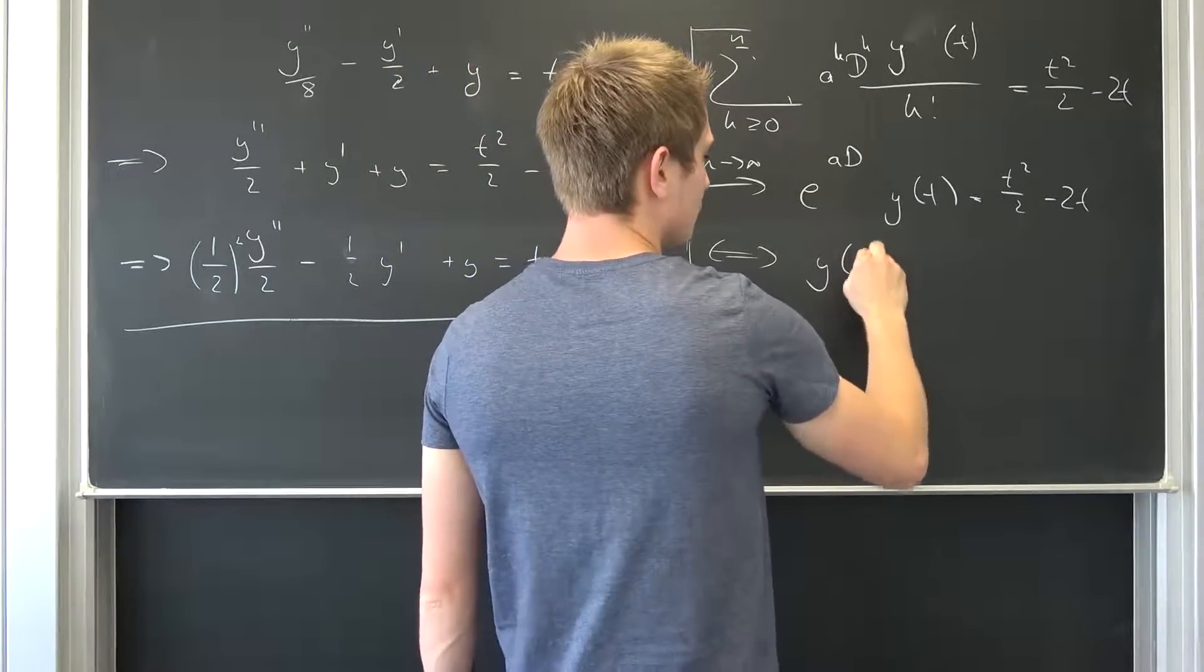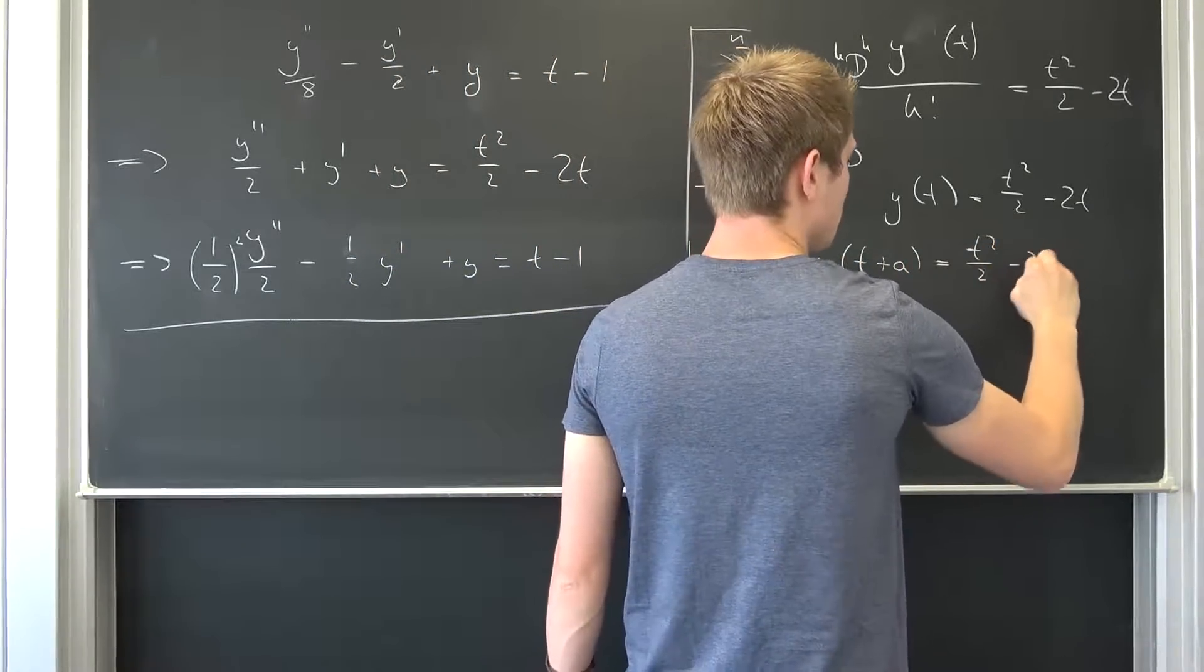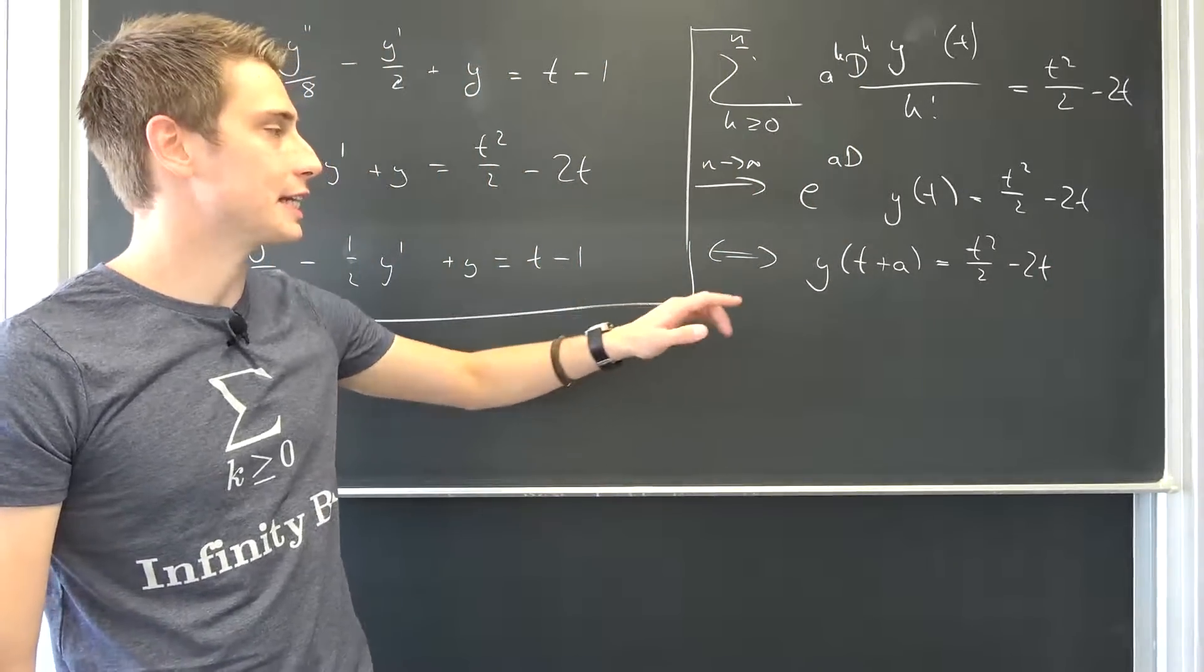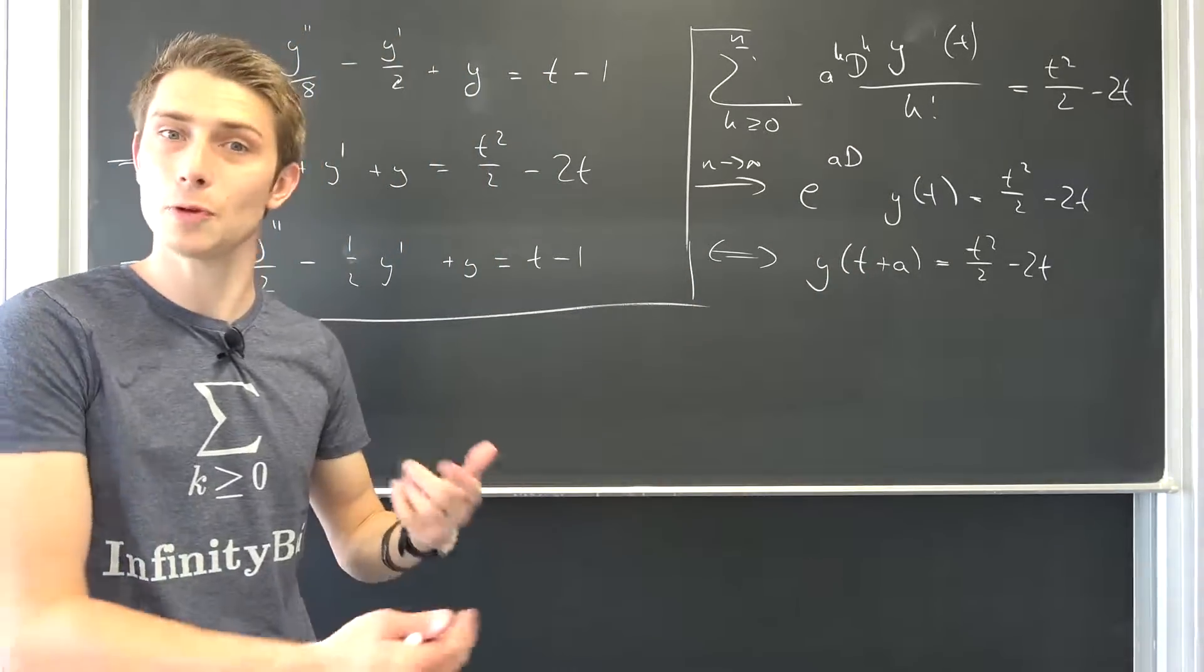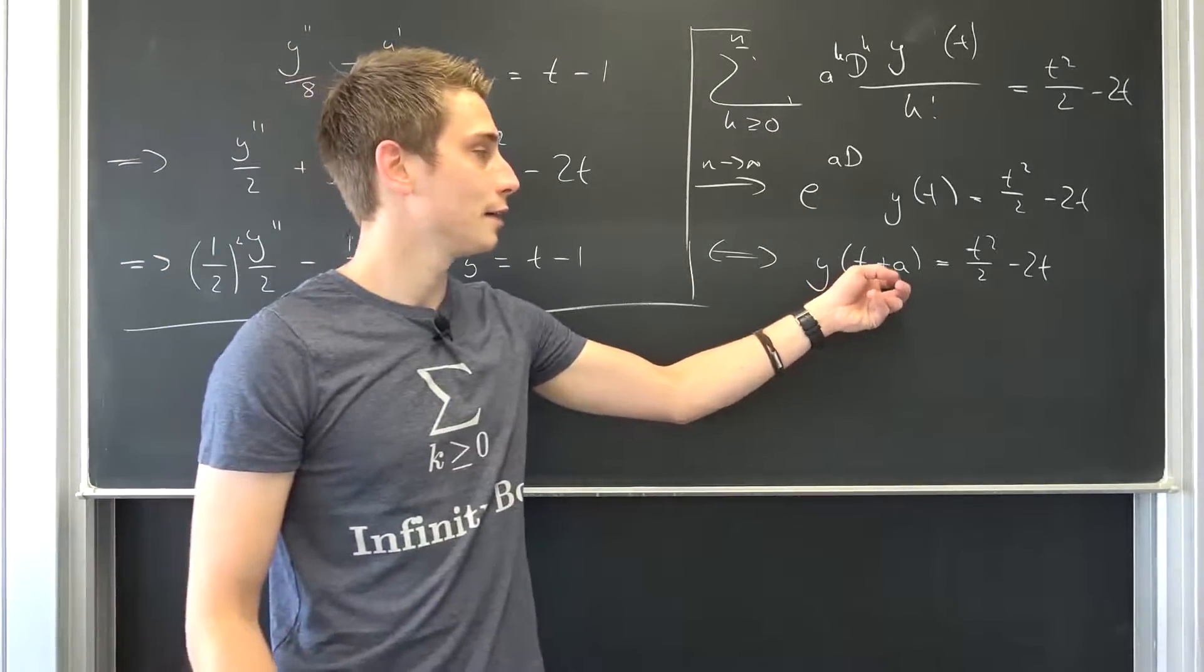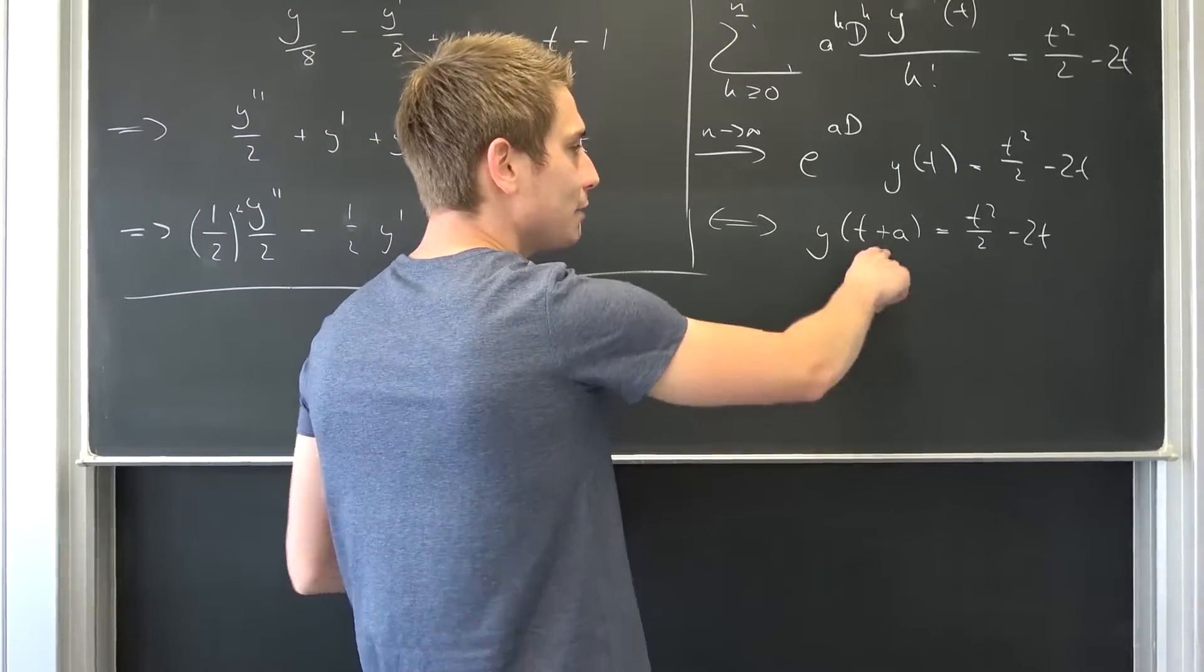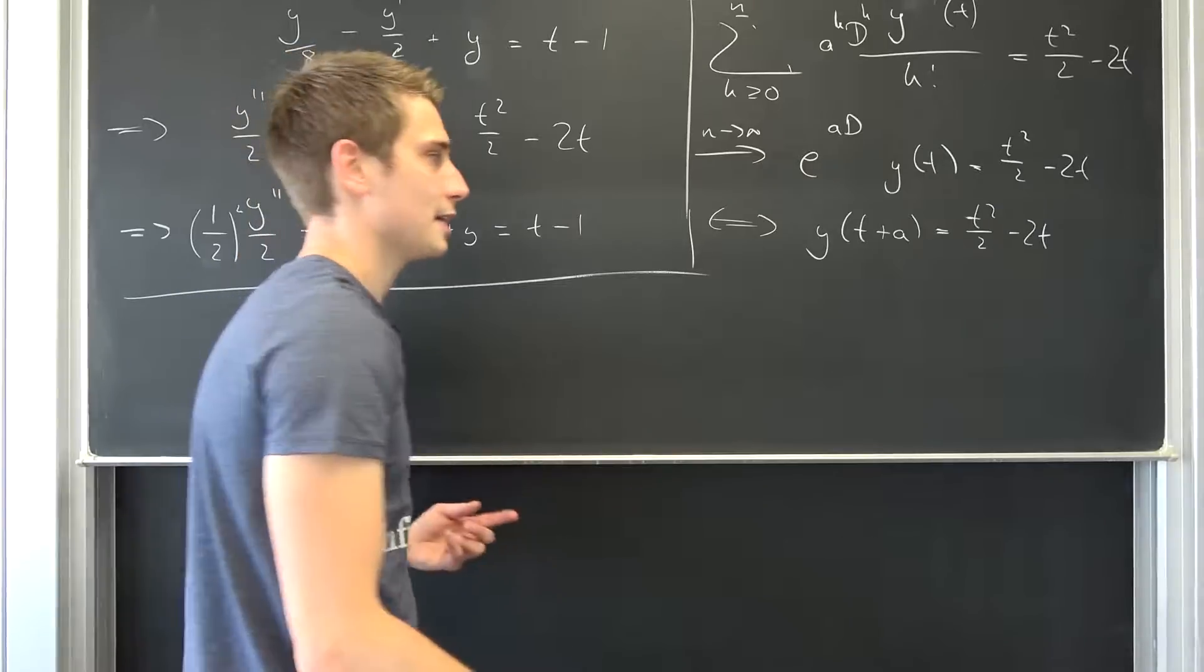We are going to get y of t plus a is t squared over two minus two times t. Isn't that cool? This doesn't really look like a solution to our differential equation yet, just because we are looking for y of t, not y of t plus a. Well, we are just going to shift it a units to the right. We are going to say that t plus a is nothing but our new t, meaning our t is thus the new t minus a.